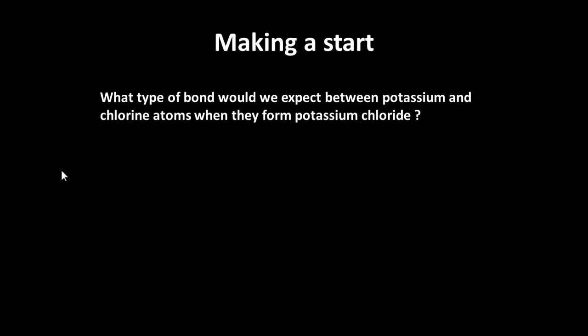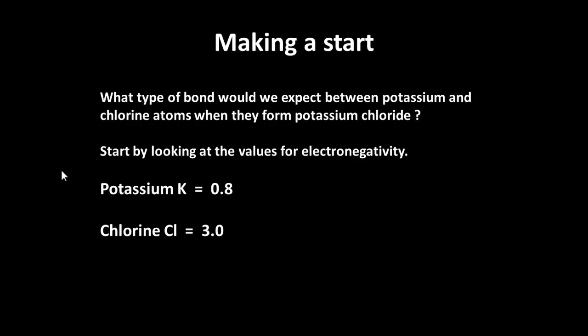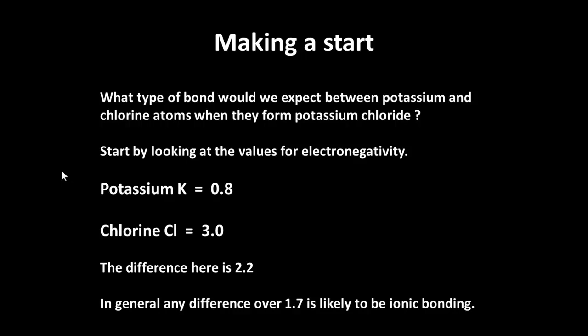So what type of bond would we expect between potassium and chlorine ions if they form potassium chloride? We start by looking on one of these tables for electronegativities. And we'll find potassium has a value of 0.8, chlorine of 3. So I take the difference there, 2.2. That's greater than 1.7. And so it's likely to be an ionic bonding.